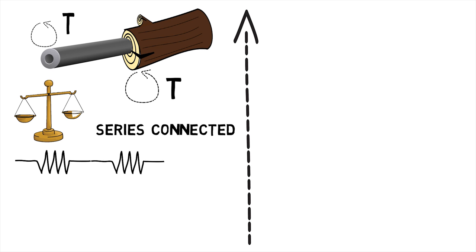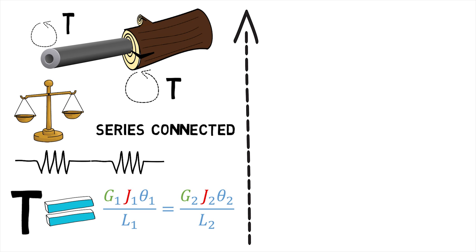Here the equilibrium of the shaft requires that the torque T be the same throughout both parts and is given by GJ theta upon L for each shaft.